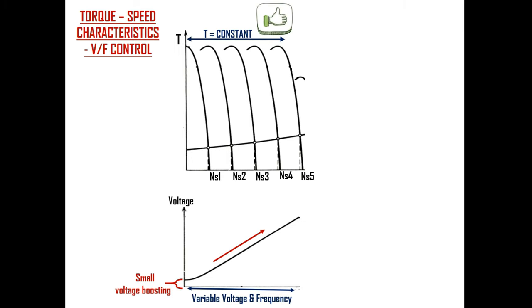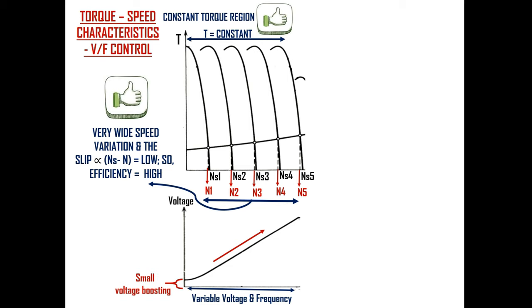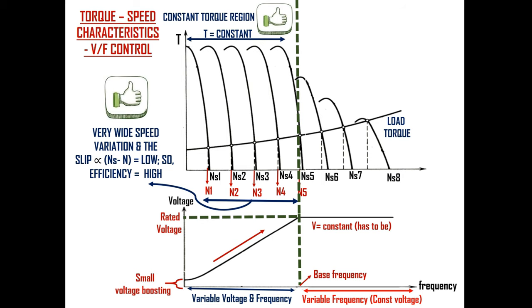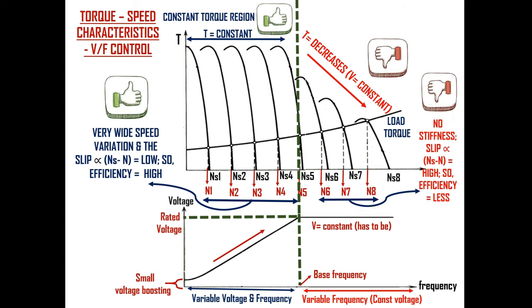Now let's see the torque-speed characteristics of V/F control. When voltage and frequency are varied along with small voltage boosting at low frequencies, the maximum available torque is constant — that's why it's called the constant torque region. We can also get very wide speed variation for a given load torque, and high efficiency since slip (proportional to Ns minus N) is low, whether at low speed (Ns1 minus N1) or high speed (Ns5 minus N5). Beyond the rated voltage or base frequency, voltage is maintained constant so only frequency can be varied. The maximum available torque decreases, slip becomes higher, and efficiency is lower. Since both torque and flux decrease beyond rated voltage or base frequency, this region is called the flux weakening region, and we operate the induction motor here when speed alone is the objective.